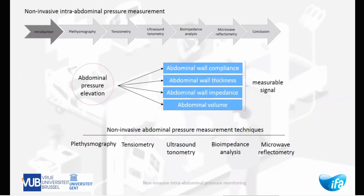The main idea behind all these monitoring techniques is to find the main impact of abdominal pressure on the human body and then subsequently track that parameter. Finally, by means of calibration, we can convert the abdominal pressure into another kind of signal and monitor abdominal pressure based on that secondary signal. This presentation covers the application of plethysmography, tensiometry, ultrasound tonometry, bioimpedance analysis, and microwave reflectometry in abdominal pressure monitoring.